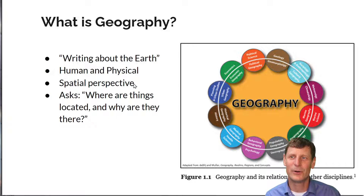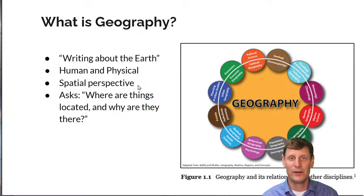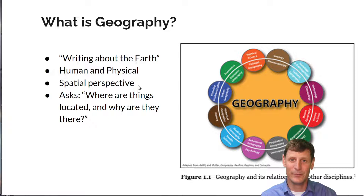That unified way of thinking is what we call the spatial perspective. The spatial perspective is a way of looking at the world, a way of looking at humans and human society, and thinking about where people are, what they do, and making sense of it. And ideally, when we get into science, we try to not just make sense of it, but build theories that help us predict different occurrences or patterns.